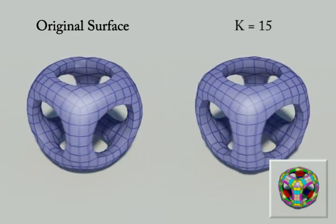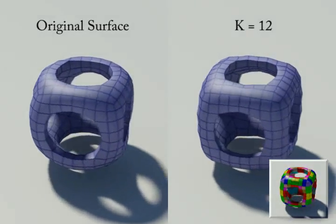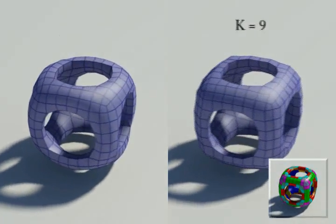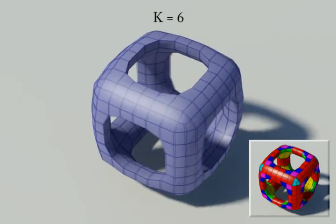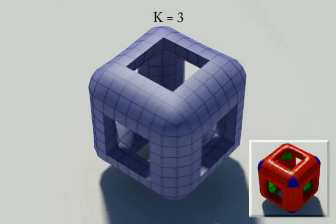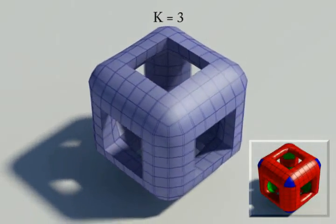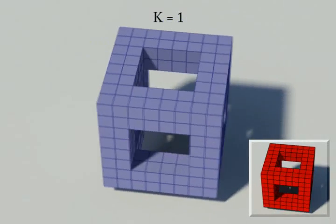Different k in decacube. As k decreases, we gradually lose flexibility to maintain the surface smoothness. And when k goes down to 1, the decacube becomes cubic shape.